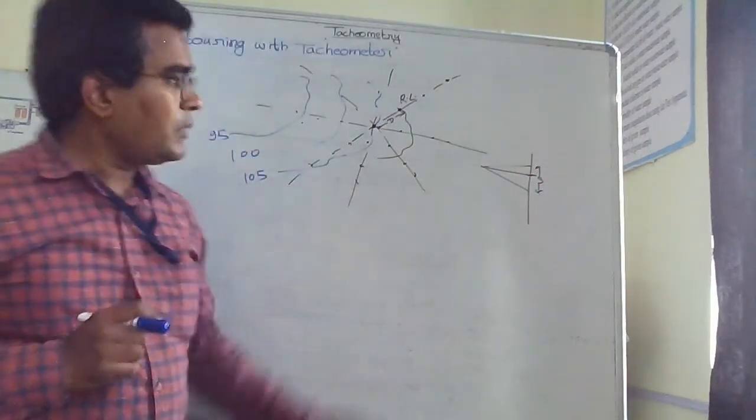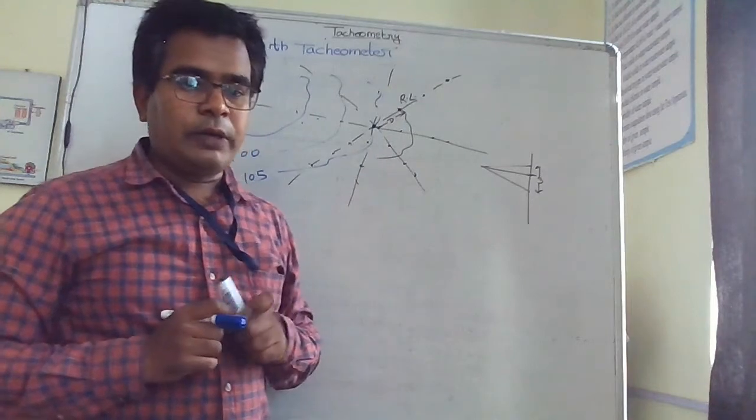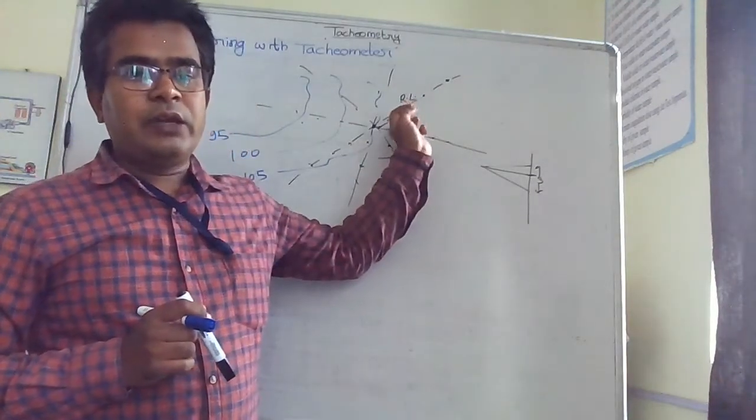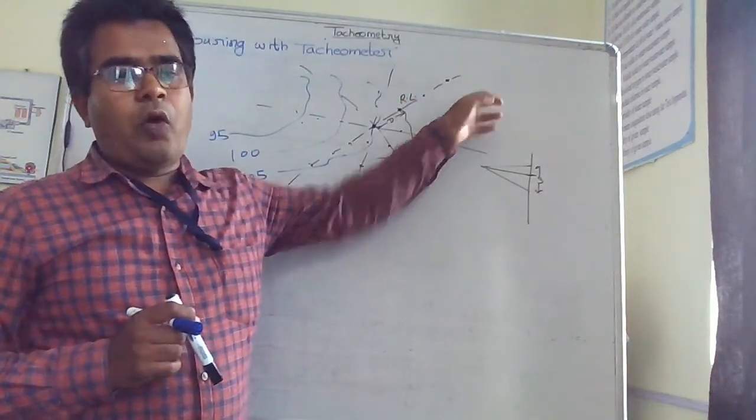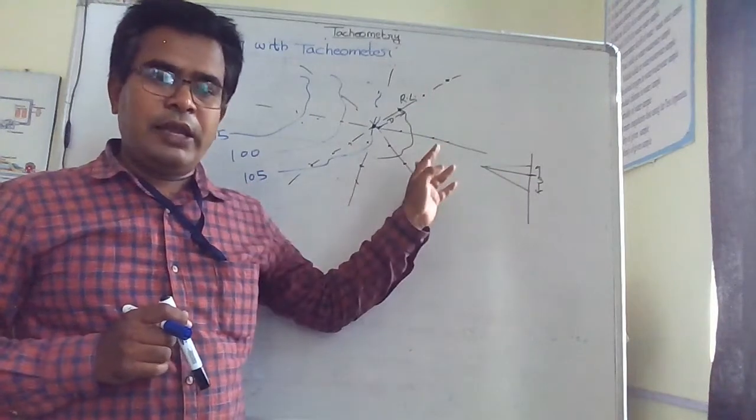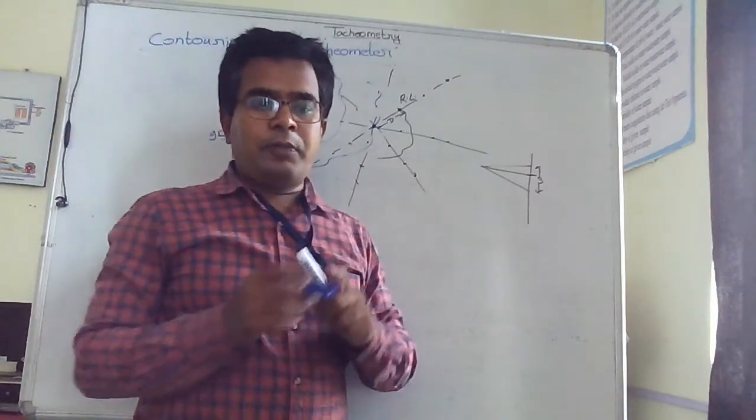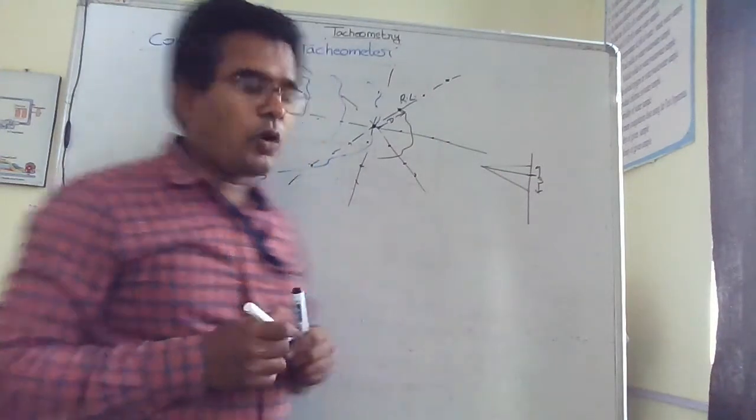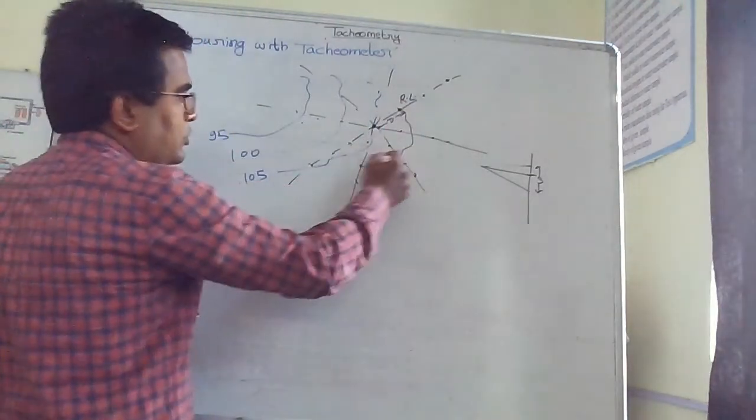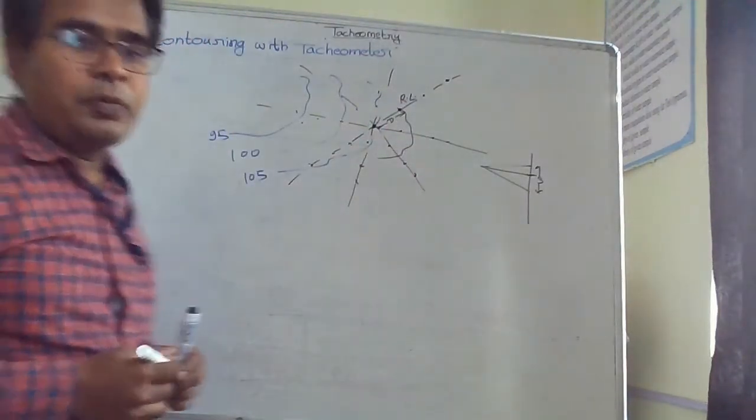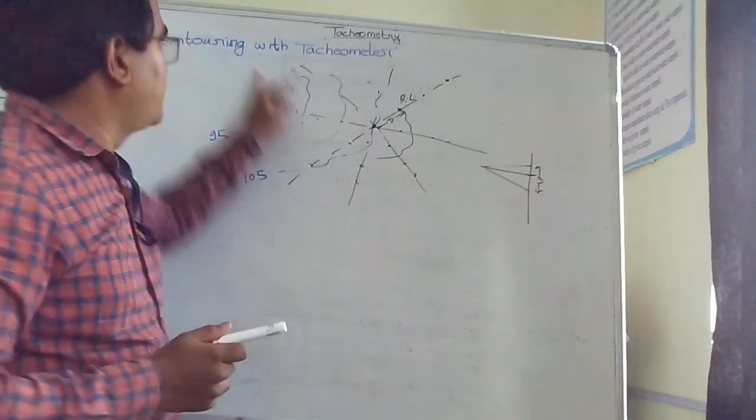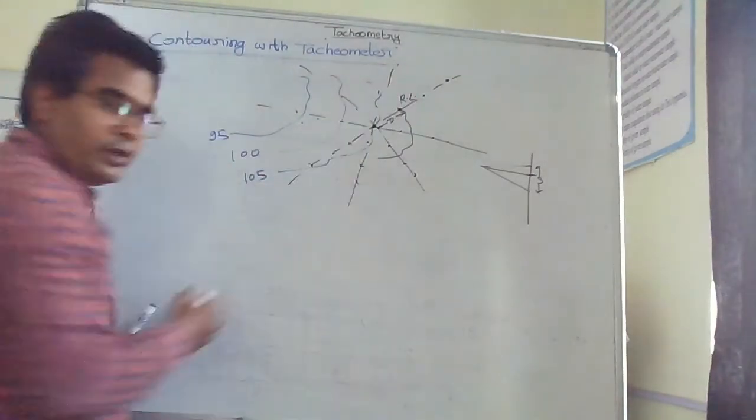Like that, we get the RL of different points on this undulated area. After marking that on the sheet, we can draw a contour map by joining the points of equal RL. This is contouring with a tachometer.